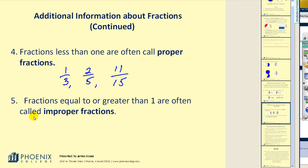Number five, fractions equal to or greater than one are often called improper fractions. So if my denominator is five and I have a numerator of let's say seven, that would be considered an improper fraction, which would be greater than one. We should also note that if the numerator and denominator are equal, if I have eight eighths, that is also considered an improper fraction.